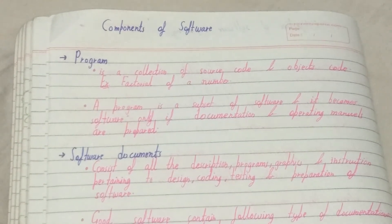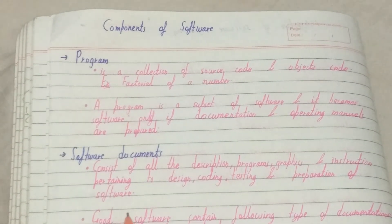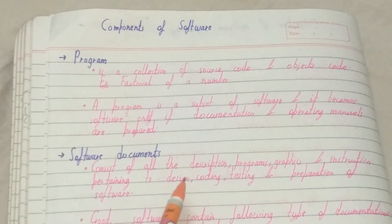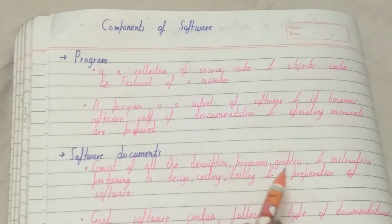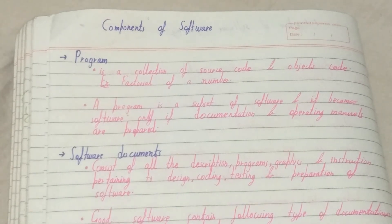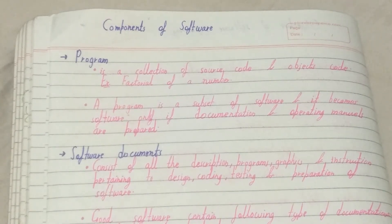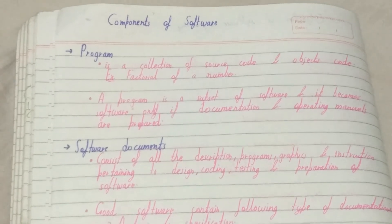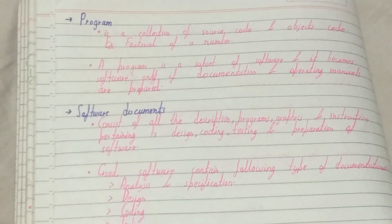The next main important component is software documentation. It consists of all the documents, descriptions, programs, graphics, and instructions pertaining to design, coding, testing, and preparation of software. It basically contains all the history of the software — how the software was designed or how the software was made from the initial stage till now.